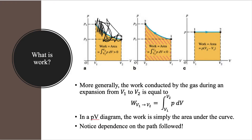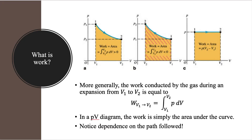Notice that by definition, work is highly sensitive to the path you're following. Whether you go from point 1 to point 2 with a smooth curve or a different trajectory will make a difference on the work done. For example, if you expand at the same pressure and then keep the volume constant while decreasing the pressure, you also end up at V2, but the gas will have done a lot more work than if it had followed a different path. So the path matters.